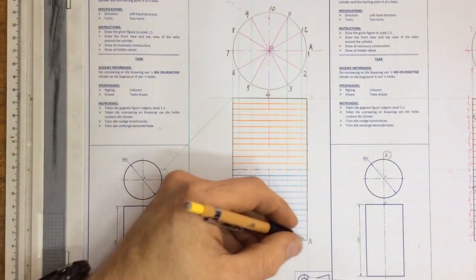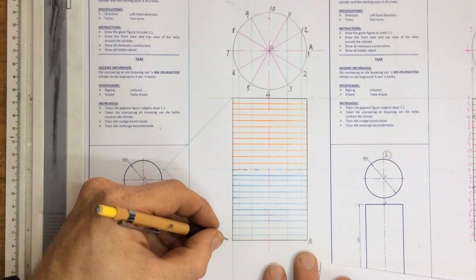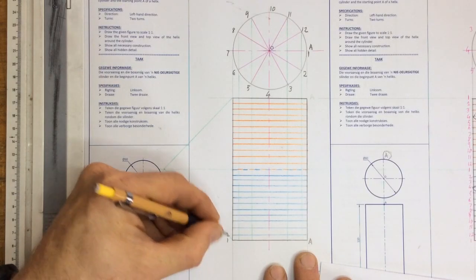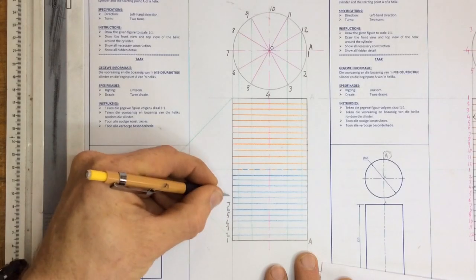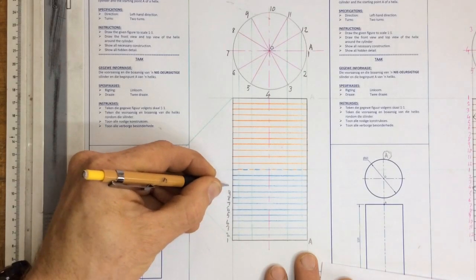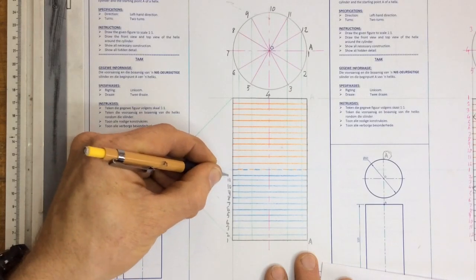When I'm numbering this thing, this line over here would be number one. That would be two, three, four, five, six, seven, eight, nine, ten, eleven, twelve.